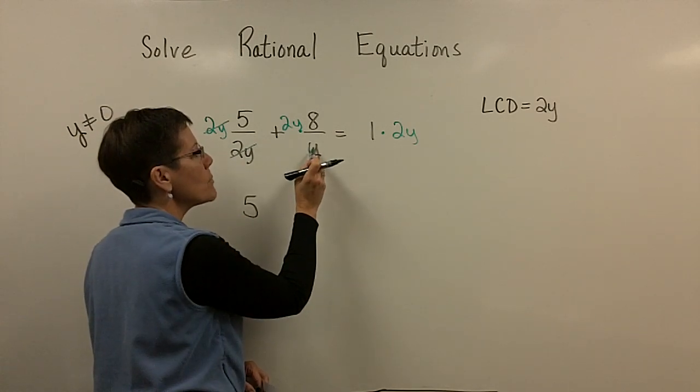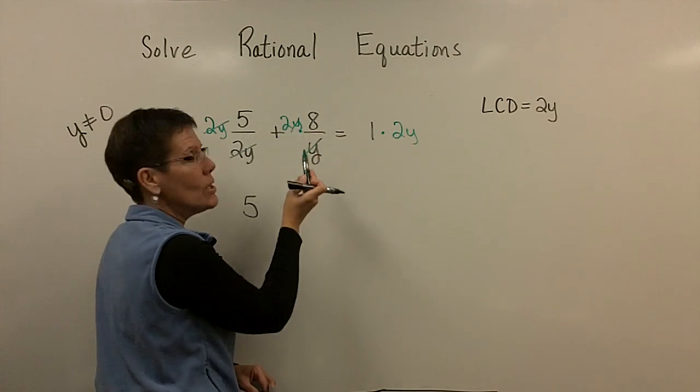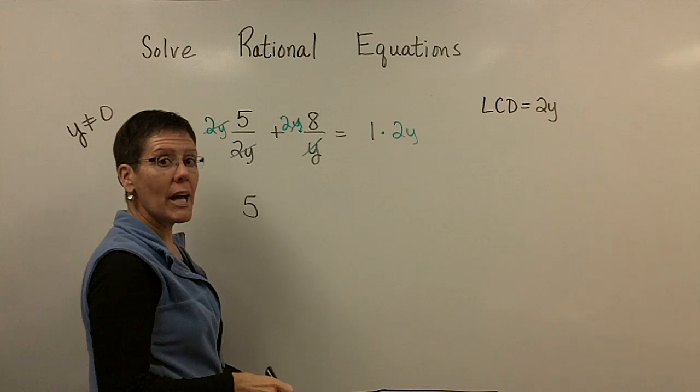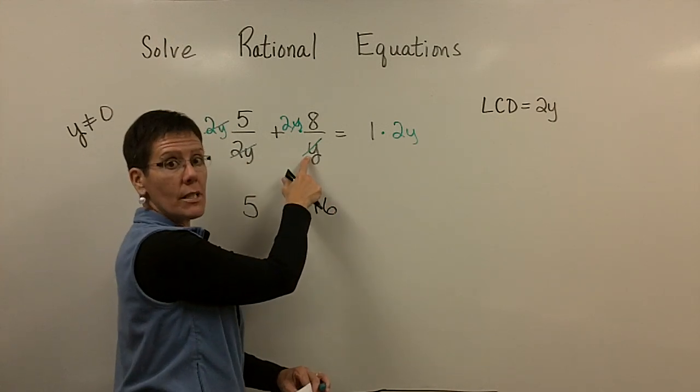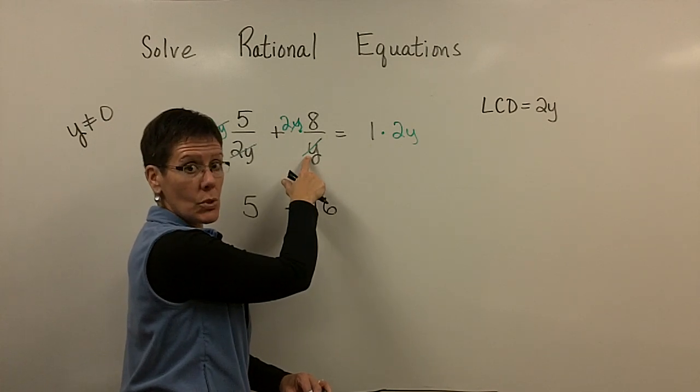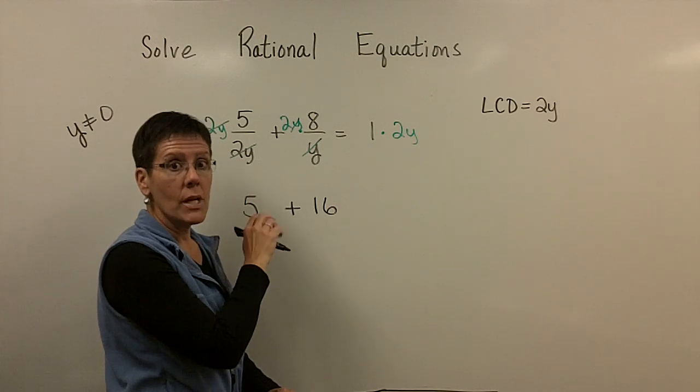Or right here, this one had a denominator of y in it. The y's will cancel out. So the 8 just gets multiplied by the 2. If you want to do that without showing this work, if you want to just look at this and say that denominator is missing a 2, and so that 8 is going to have to be multiplied by the 2, that's cool.